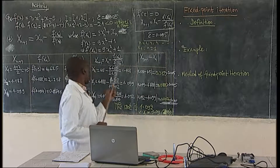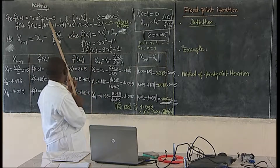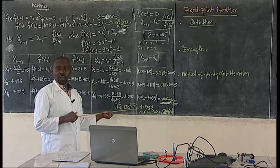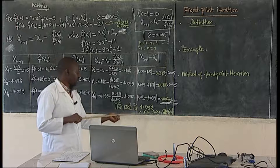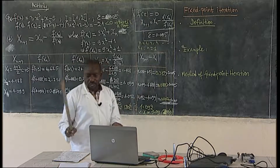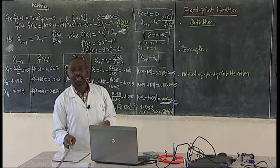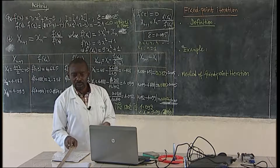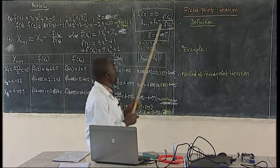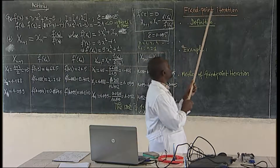So our equation has been solved by Newton-Raphson method. So the answer is this one. So we want to continue with the same unit, of course, with a new method known as the fixed point iteration.